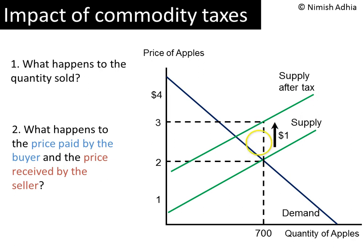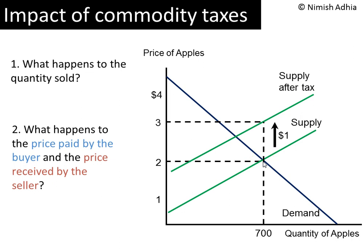Why exactly $1? Recall that the height of the supply curve represents the minimum price that producers want. Earlier they wanted $2, but now because they have to pay $1 tax to the government, they want to pass on that $1 in the form of higher prices to consumers. So they will want $3 in order to continue to supply 700 apples.